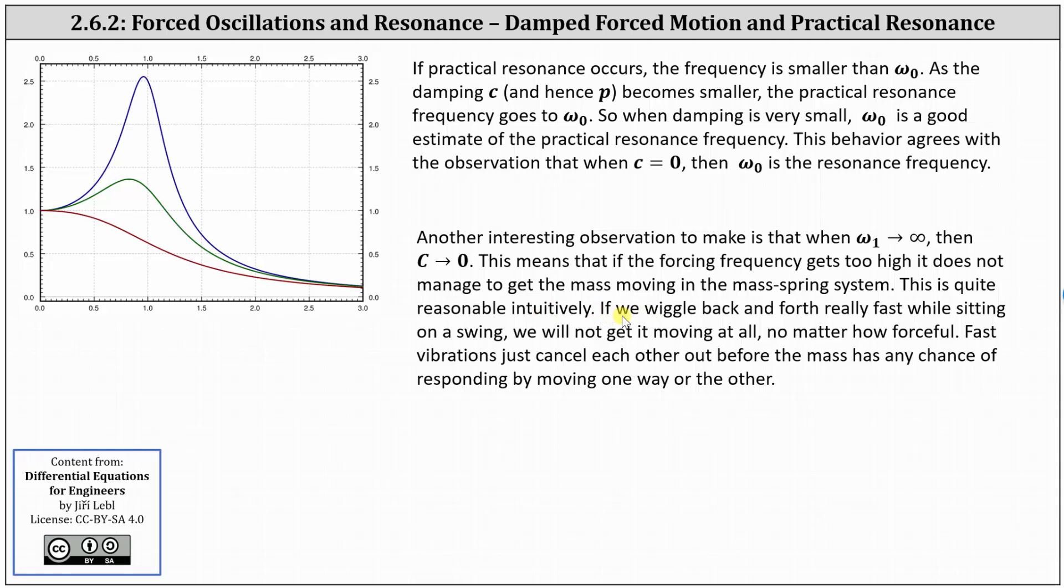If we wiggle back and forth really fast while sitting on a swing, we will not get it moving at all, no matter how forceful. Fast vibrations just cancel each other out before the mass has any chance of responding by moving one way or the other. I hope you found this helpful.